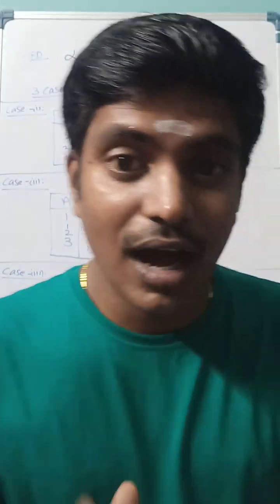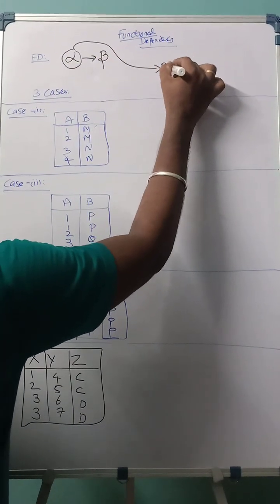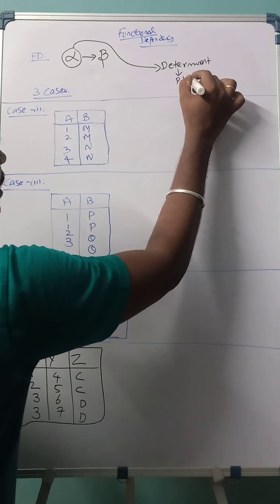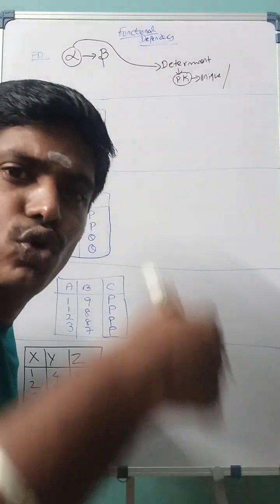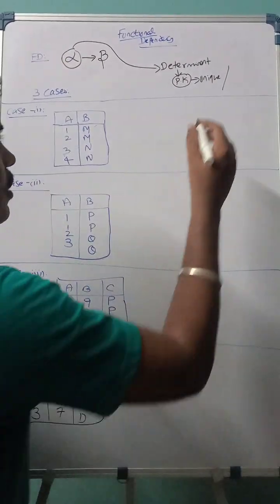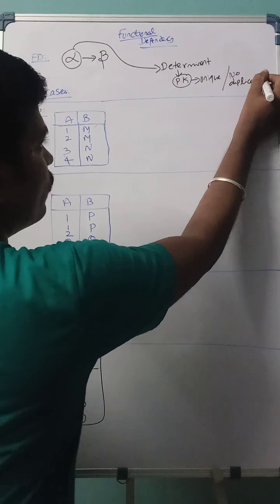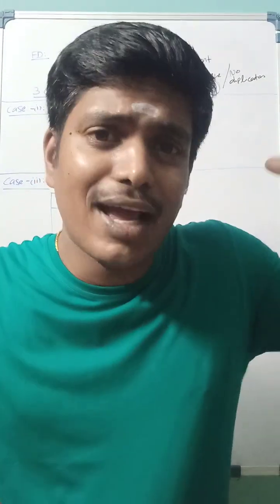The general form of functional dependency is alpha determines beta. Alpha is called the determinant. It will contain the primary key, meaning it will contain unique values — duplicates are not allowed. This is the rule for the alpha side. Beta side has no rule, while alpha side has a rule it must follow.